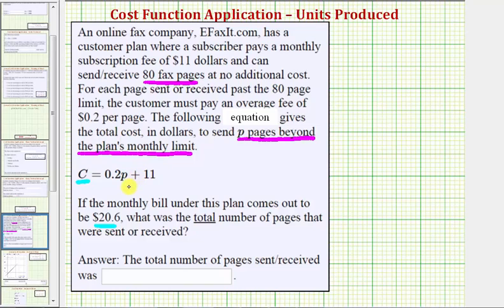But then recognize that p is the number of pages beyond the 80 page limit. So starting with our cost equation, c equals 0.2p plus 11, we'll substitute 20.6 for c, so we want to solve the equation 20.6 equals 0.2p plus 11.